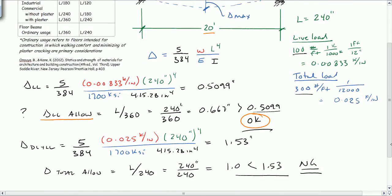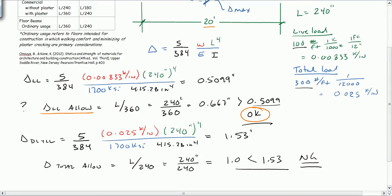Then we went down and we checked it for total load. And we looked at this and we said, OK, let's put the total load in here. We get 1 and 1 half inches. But we're only allowed L over 240 or 1 inch. We have more deflection than is allowed. So we found that it's no good. So this beam was no good. And the 4 by 12 Doug Fir Larch is not adequate.